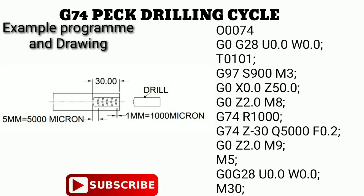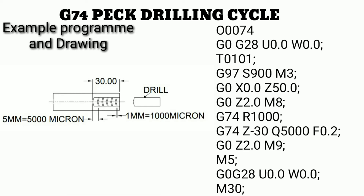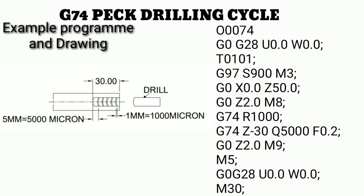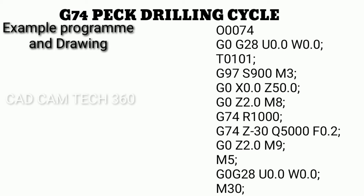The first line of the G74 cycle: R1000 is the retract value. G74 Z-30.0 is the total drilling depth of 30mm. Q5000 is the peck depth of 5mm per peck. F0.2 is the feed rate — 0.2mm per revolution.